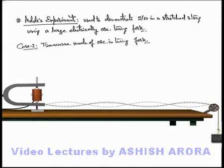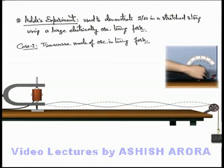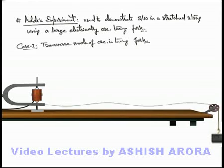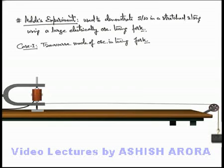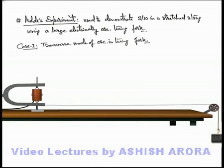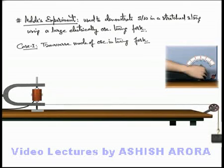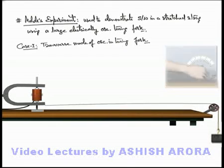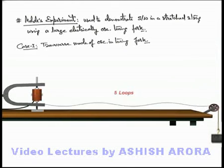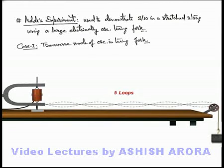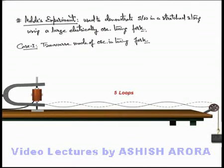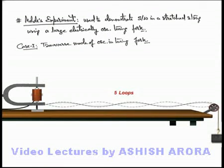In this situation, if we change the frequency of the tuning fork — say we slightly increase the frequency — you can see the wave will start damping out and no loops are being formed. If we further increase the frequency, at a particular level you can see 5 loops are being formed, because now the frequency of the tuning fork is matching with the 5th harmonic of this clamped string. This is the way we can understand how resonance takes place in the matching of frequencies of an external source and that of a string.